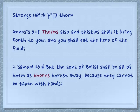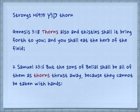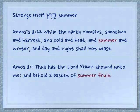Genesis 3:18 — Thorns also and thistles shall it bring forth to you, and you shall eat the herb of the field. 2 Samuel 23:6 — But the sons of Belial shall be all of them as thorns thrust away; they're useless people, they're thorns, we don't want them because they cannot be taken with hands. Another end of something is kayats — it's the summer, it's the end of the harvest.